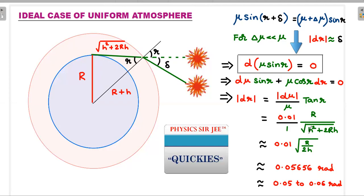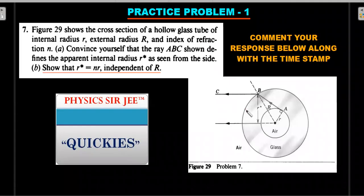This is practice problem one on similar lines. Even though it doesn't look like air and atmosphere, the logic is similar. There's an air-glass interface and a light beam comes in with some refraction. He's going to talk about the apparent internal radius as seen from the side. There's a person watching this, there's an apparent radius he will see R*, which you have to show. The interesting part - second question is that it's independent of this capital R, the outer radius of this glass, which will be interesting. We'll use this logic indirectly in practice problem two as to how the sun will look for a person watching due to refraction. Please comment your response along with the time stamp below.